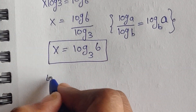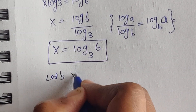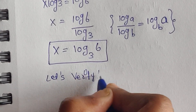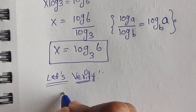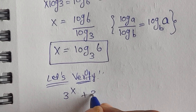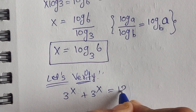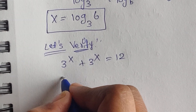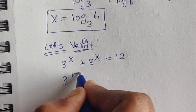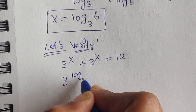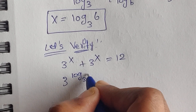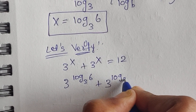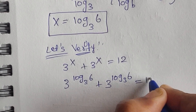So let's verify. We go back to the original equation: 3 to the power of x plus 3 to the power of x equals 12. We substitute the value of x into this equation, giving us 3 to the power of log base 3 of 6, plus 3 to the power of log base 3 of 6.